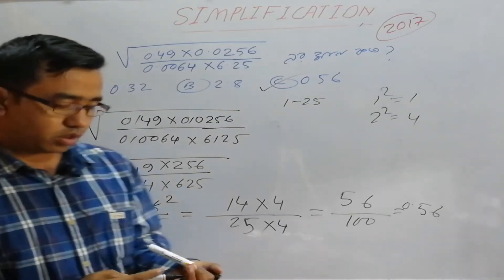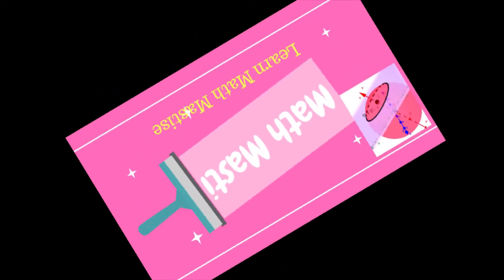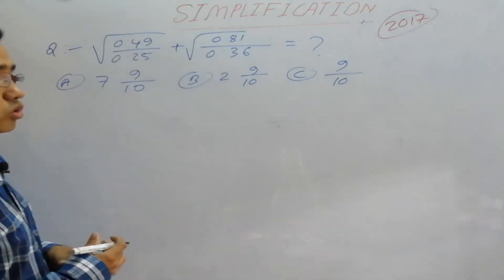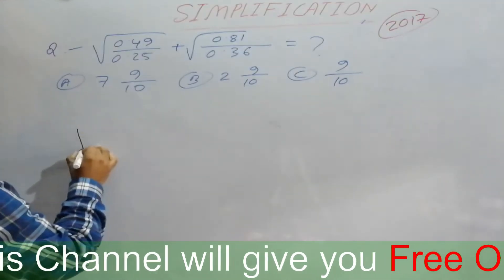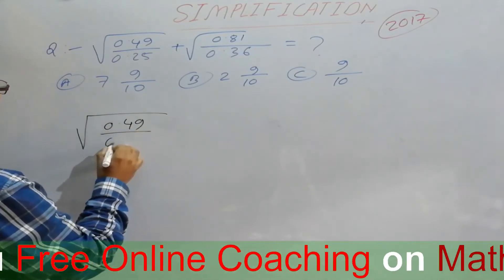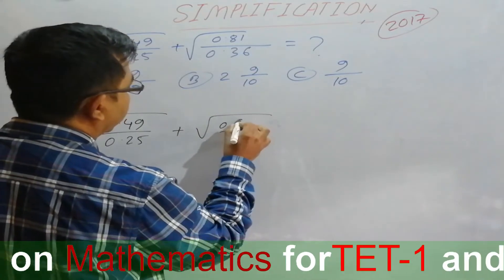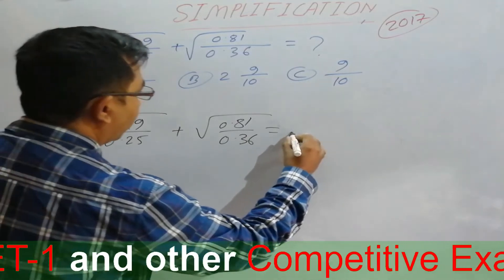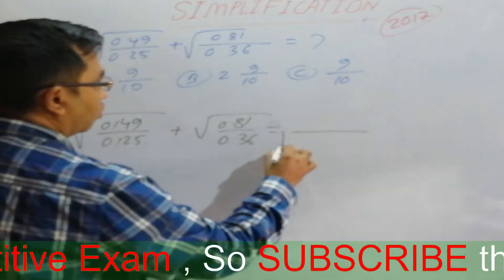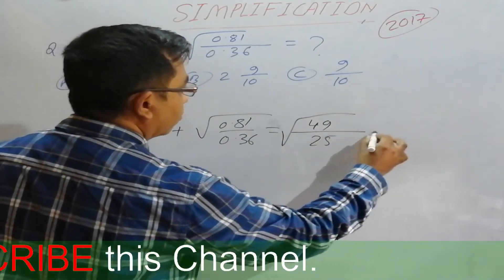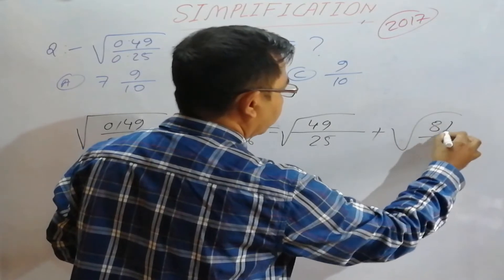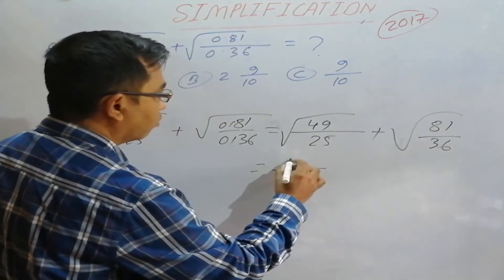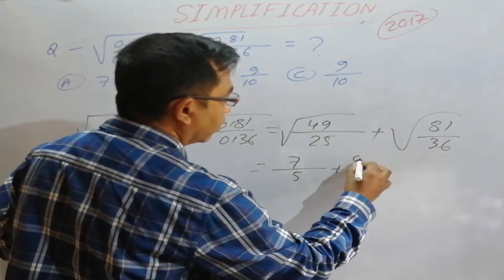The next question asks us to evaluate: root over 0.49 divided by root over 0.25, plus root over 0.81 divided by root over 0.36. The square root of 0.49 is 0.7, root of 0.25 is 0.5, root of 0.81 is 0.9, and root of 0.36 is 0.6. So this becomes 7/5 plus 9/6.